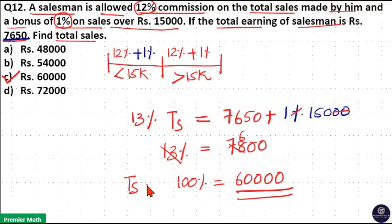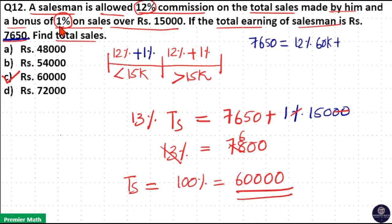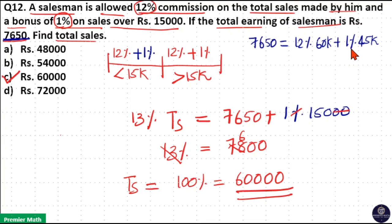To verify: ₹7,650 = 12% of total sales (₹60,000) + bonus of 1% on sales over ₹15,000. Sales over ₹15,000 = ₹60,000 − ₹15,000 = ₹45,000. So 12% of ₹60,000 + 1% of ₹45,000 = ₹7,200 + ₹450 = ₹7,650. Confirmed.